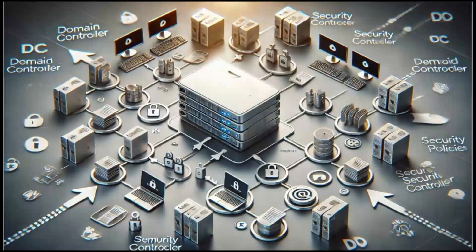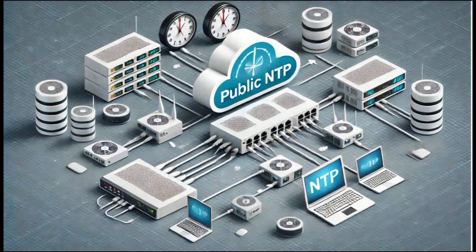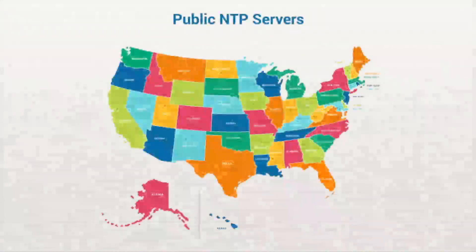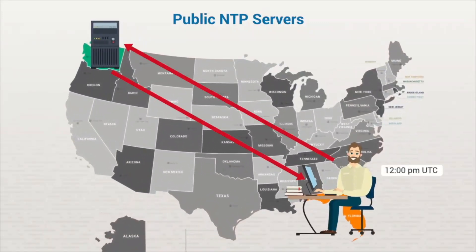Usually, a domain controller is configured to act as the organization's NTP server, and it reaches out to a public NTP server to update its time. In this scenario, the domain controller would be at stratum level two. Public NTP servers are also used by individual users to update their computer times. For example, Microsoft maintains a list of public NTP servers that devices can reach out to in order to automatically update their clocks.